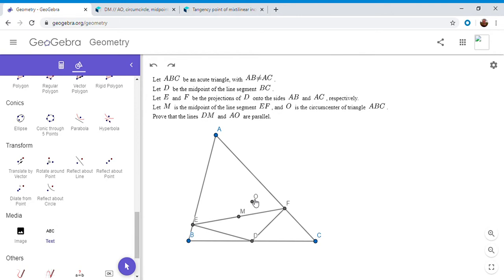So when I first saw this problem, I thought of a theorem. So the line AO is always perpendicular to the line connecting the feet of the altitudes from B and C. So if we drew the feet of the altitude from B to AC, and we drew the foot of the altitude from C to AB, and we connected the two, then AO has to be perpendicular to that.